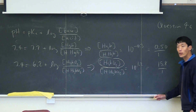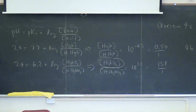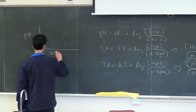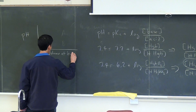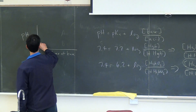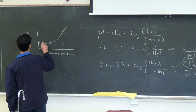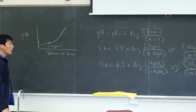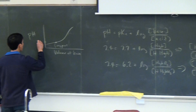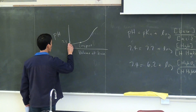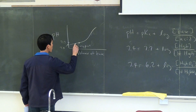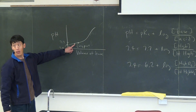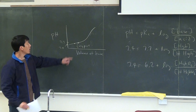Another way to approach this, without doing a calculation, is to look at the titration curve. For HHgb, the halfway point is at pH 7.7. At pH 7.4, we are just below that halfway point, so based on the titration curve, there is going to be more acid present.